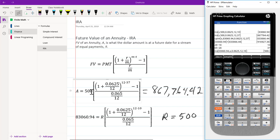We find that the value for a payment of $500 over 37 years at 6.25% compounded monthly is $867,764.42, which we can see in our calculator.